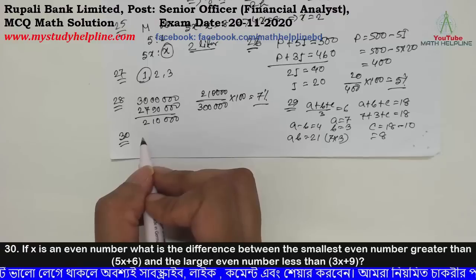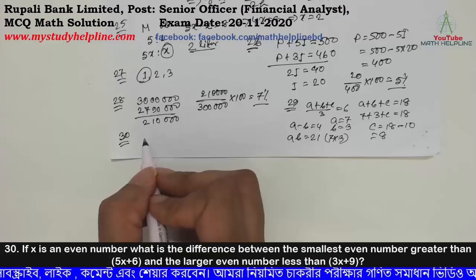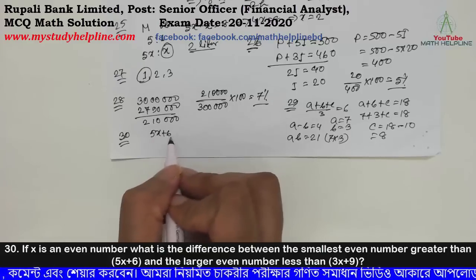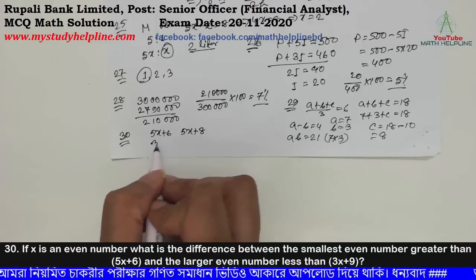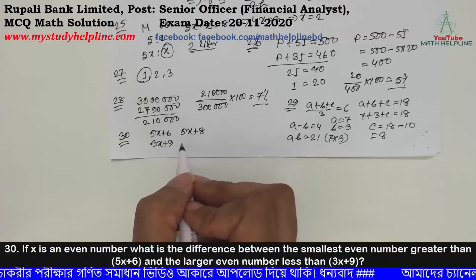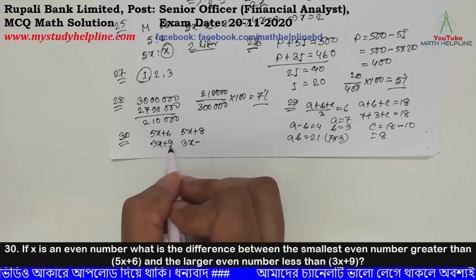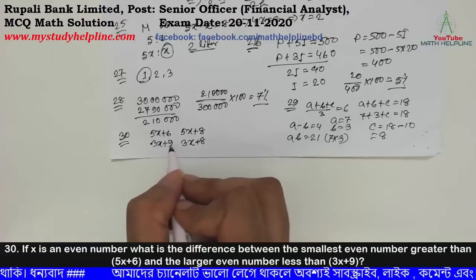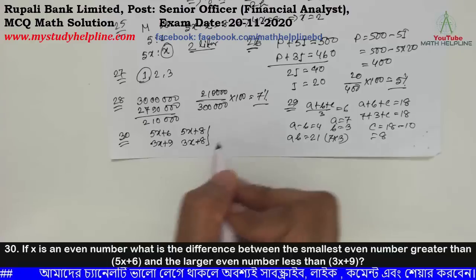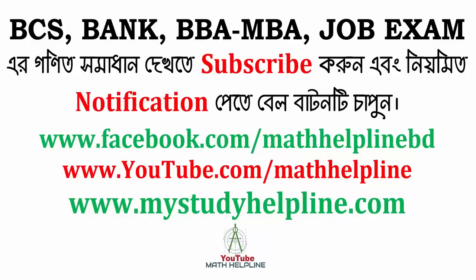X is an even number. What is the difference between the smallest even number greater than 5x plus 6 and the largest even number less than 3x plus 9? Since 5x plus 6 is even, the smallest even number greater than it is 5x plus 8. For 3x plus 9, since 9 is odd, the largest even number less than 3x plus 9 is 3x plus 8. The actual even number equals 8, so the median number equals 9. The difference between these two expressions gives the final answer.